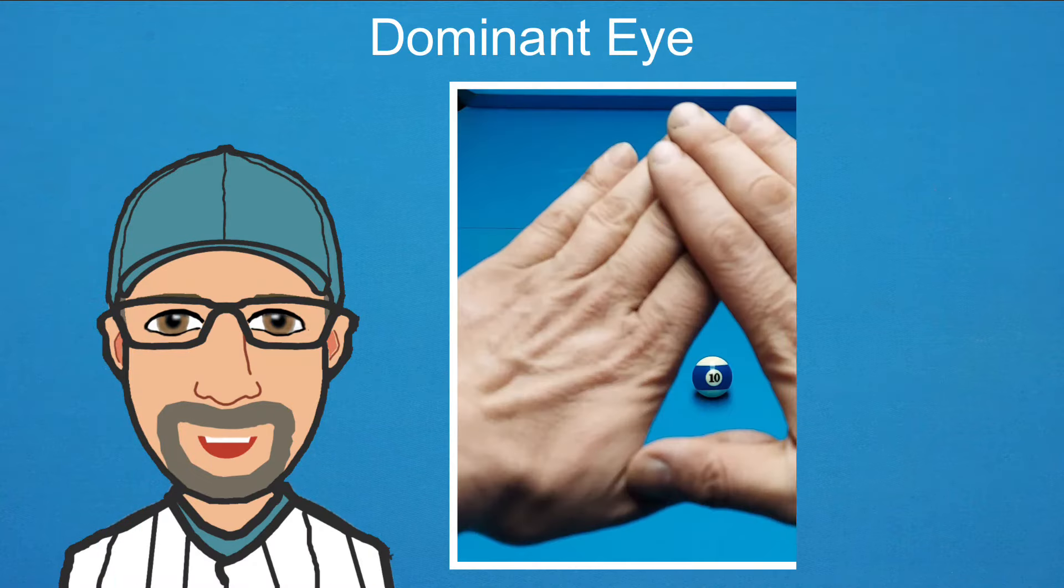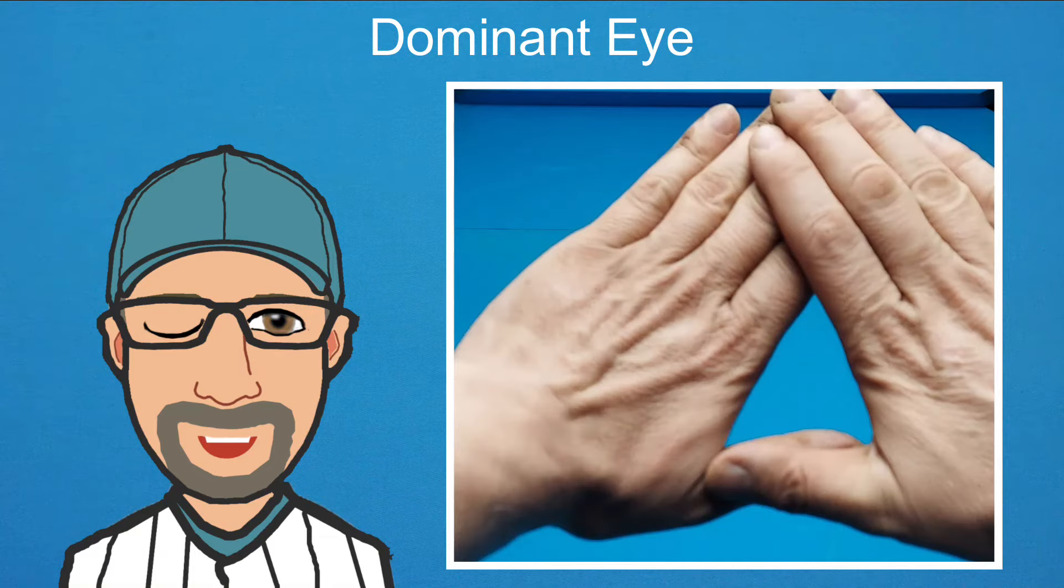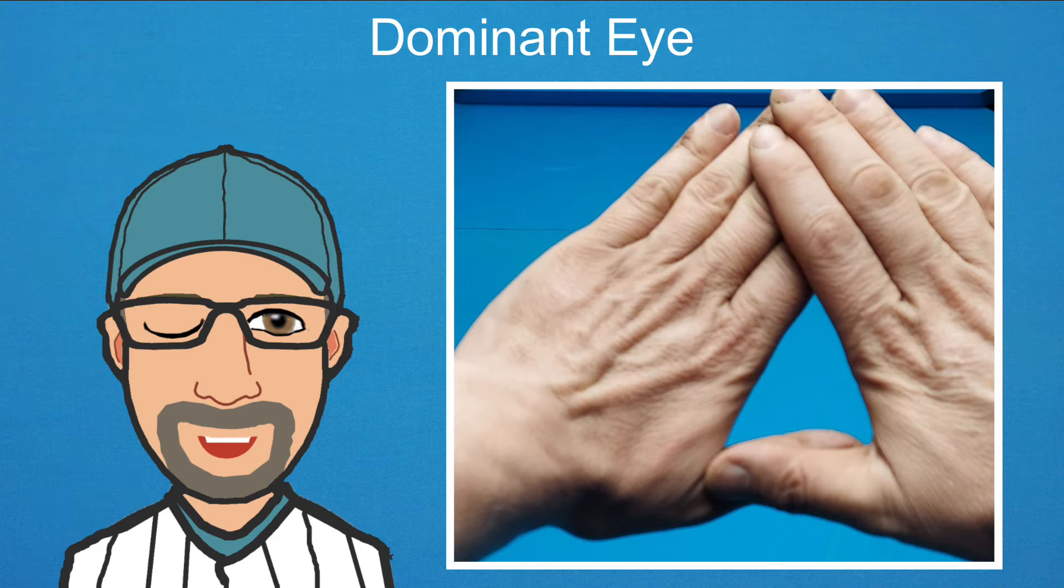Hold your hands at arm's length, making a triangle opening, and look at a distant object through the hole with both eyes open. Now close your right eye. Did the object disappear? If so, then you're right eye dominant like me. The object didn't disappear. Instead, your hands shifted in your field of view because your brain is only receiving information from your left eye, from which the vergence, or the angle, is different.